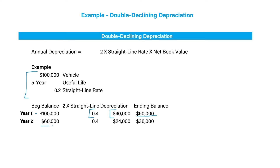In year 2, we take $60,000 times 40%, giving year 2 depreciation of $24,000, and a year 2 ending balance of $36,000. We repeat this process for all five years.